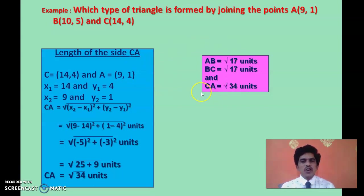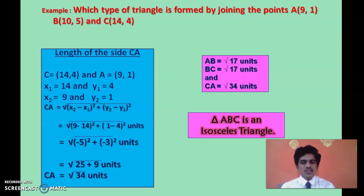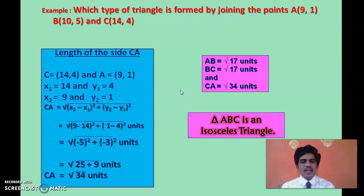Observing the results: two sides AB and BC are equal, and the third side CA is different. As we discussed, if a triangle has two sides equal in length, it is called an isosceles triangle. So triangle ABC is an isosceles triangle. By using the distance formula, we can find the lengths of the sides and then classify whether it is equilateral, isosceles, or scalene. This is a simple application of the distance formula.